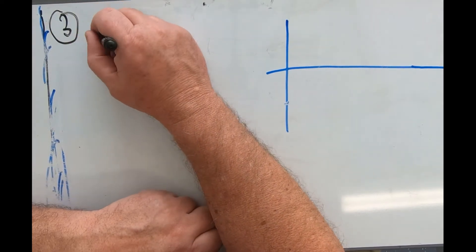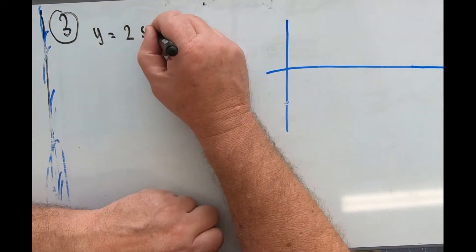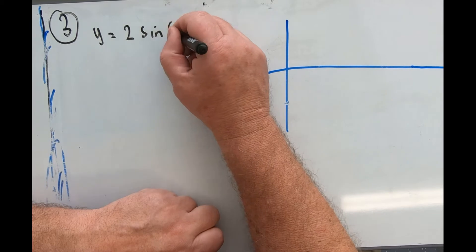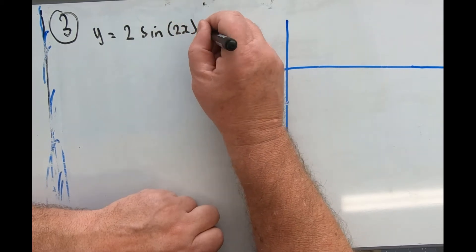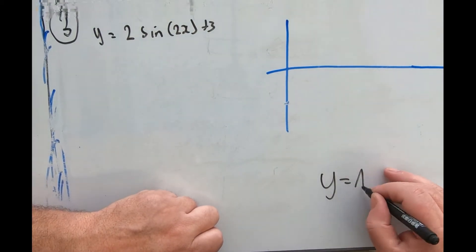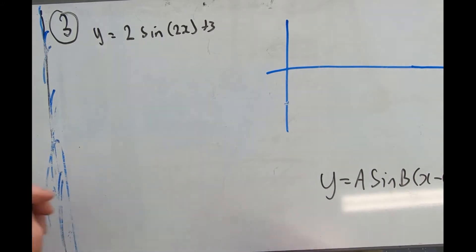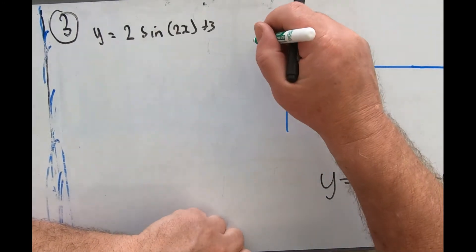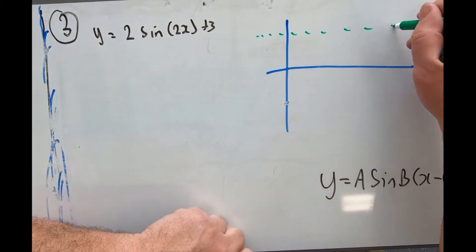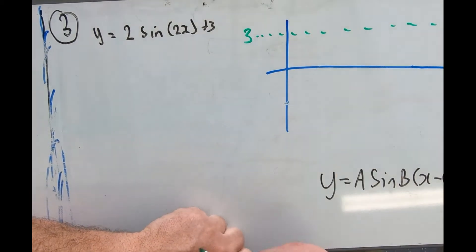Number 3: y equals 2 sin 2x plus 3. All right, so y equals A sin B x minus C plus D. Some of these are operating - D is the principal axis, which is 3. That's the average, cool.